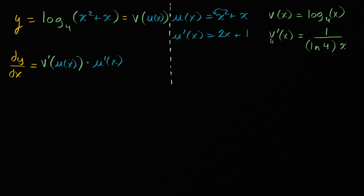Well, what is v prime of u of x? We know what v prime of x is. If we want to do v prime of u of x, we would just replace wherever we see an x with a u of x. So this is going to be equal to one over the natural log of four, times u of x, and of course that whole thing times u prime of x.